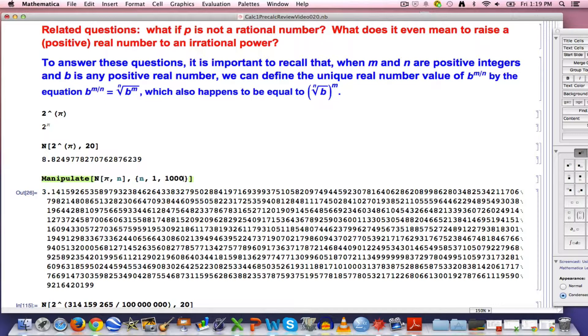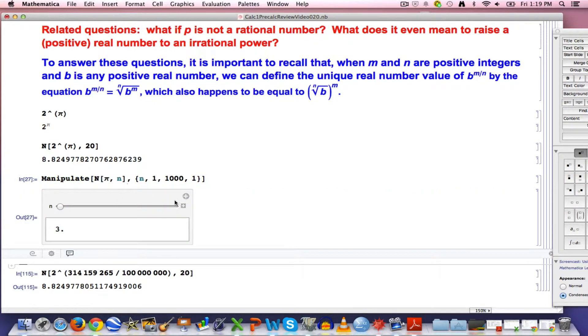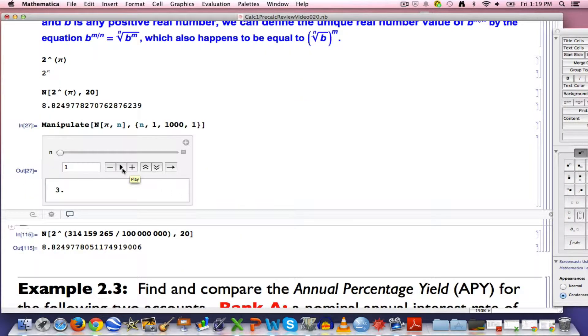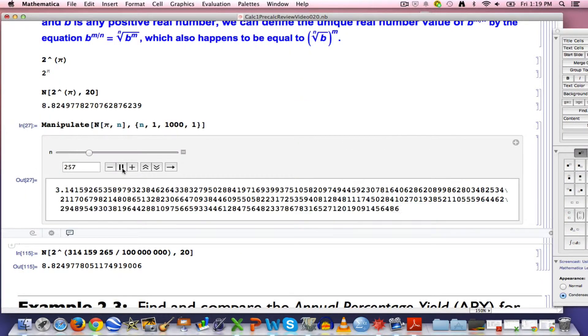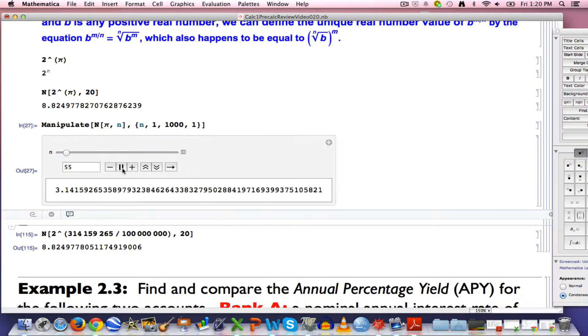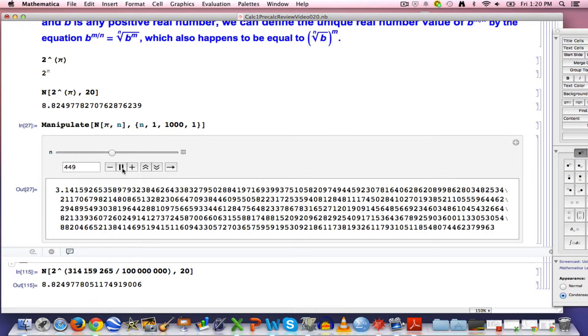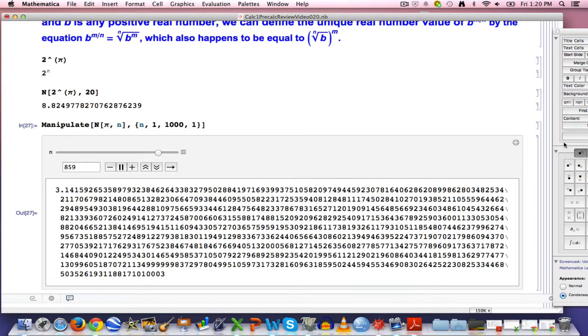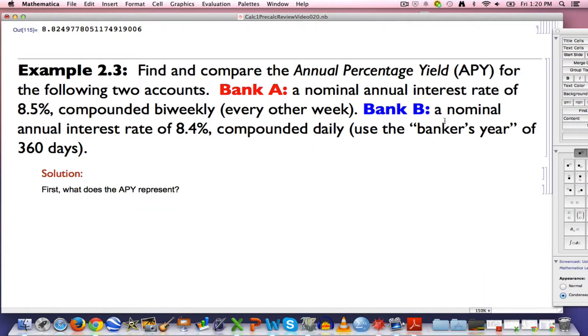If I want n to increment up by 1, first 1, then 2, then 3, then 4, etc., I need to put an extra comma 1 in here. Now we're ready to see the digits of pi, the first 1,000 digits, be animated. There we go. So yes, you can animate things with a discrete animation parameter. You can also make animations of things that are not graphs. We're going to use that as well for our new example.